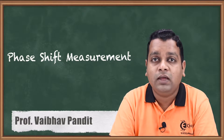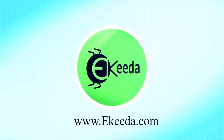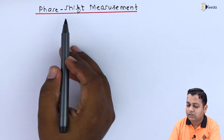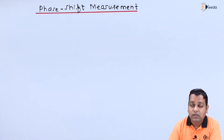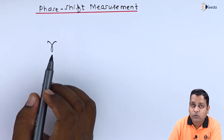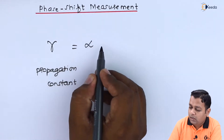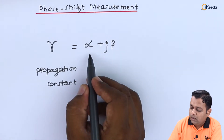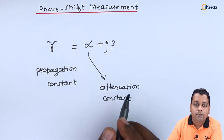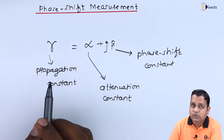After learning the attenuation measurement, we now address the measurement of another important factor called phase shift. Microwave signal is essentially an electromagnetic wave with a fixed frequency range between 1 GHz to 300 GHz. All the propagation information is accounted into gamma, the propagation constant, which is the summation of the real part alpha and the imaginary part beta — written as alpha plus j times beta.